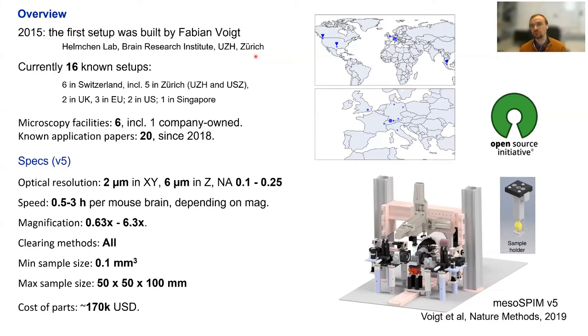There are maybe some setups we don't know exist. Most of them are in Europe, but also some in the US and even Singapore. Among these 16 setups there are quite a lot of microscopy facilities, six including one company owned. We try to keep track of published papers on our website. Currently there are 20, maybe more.